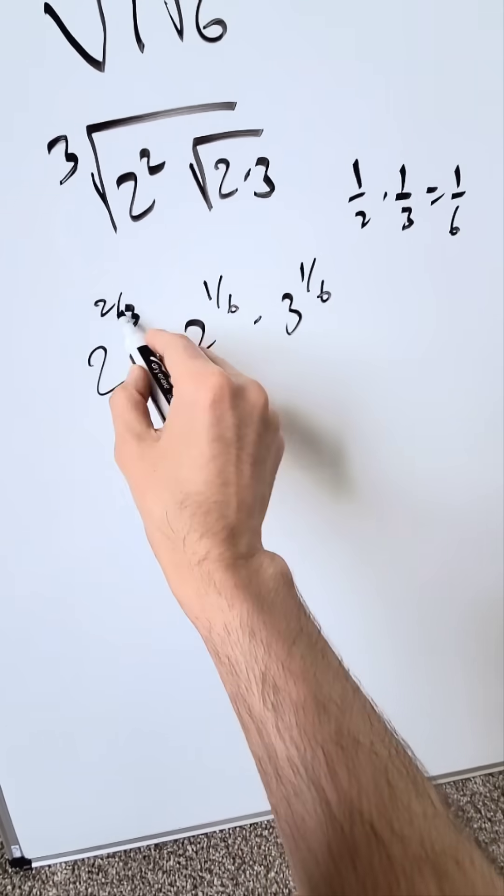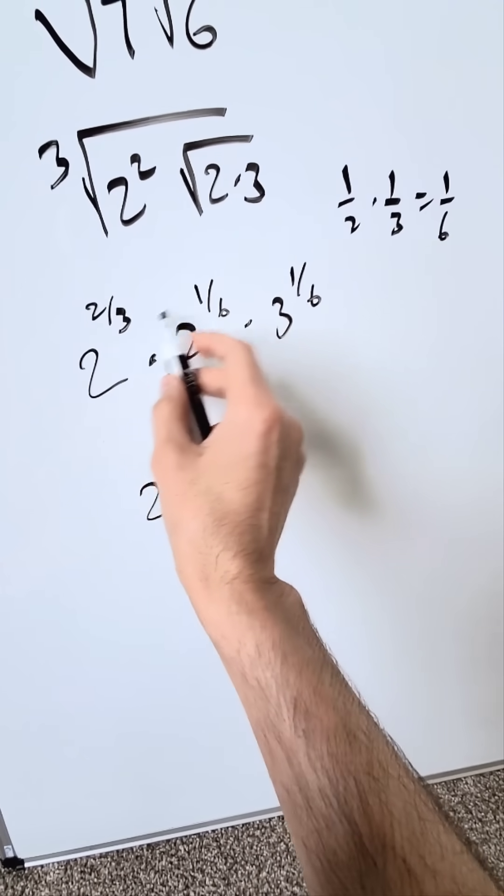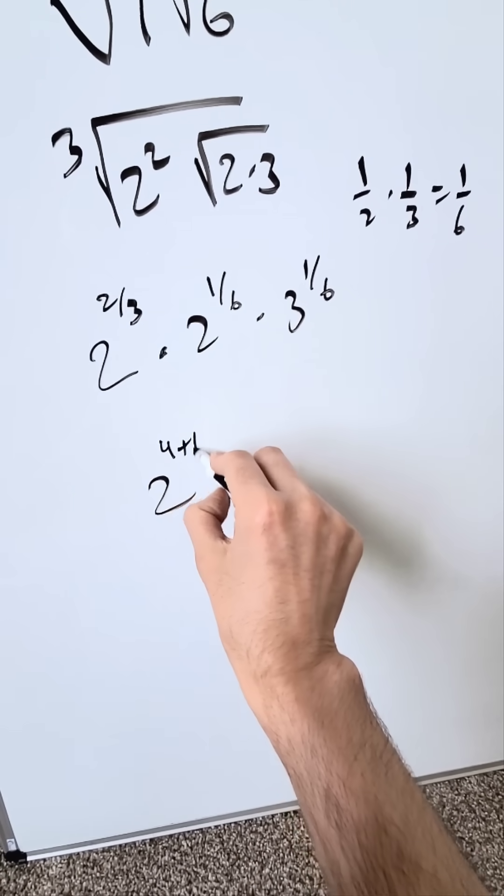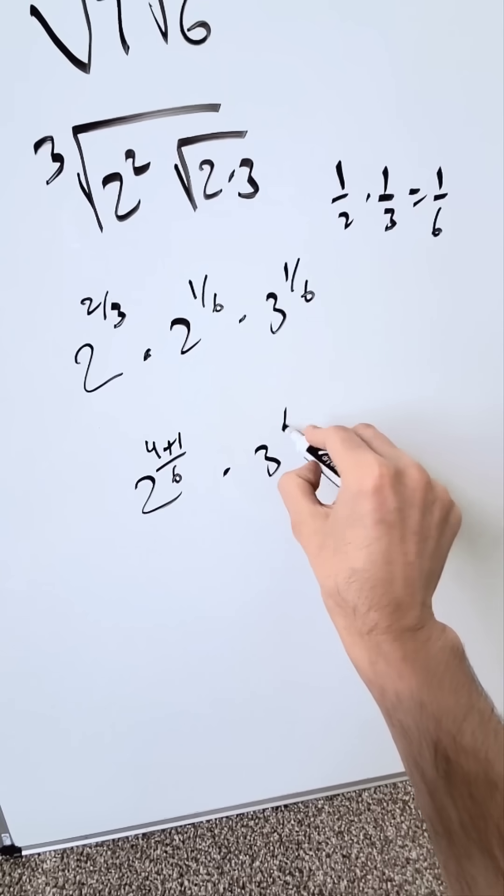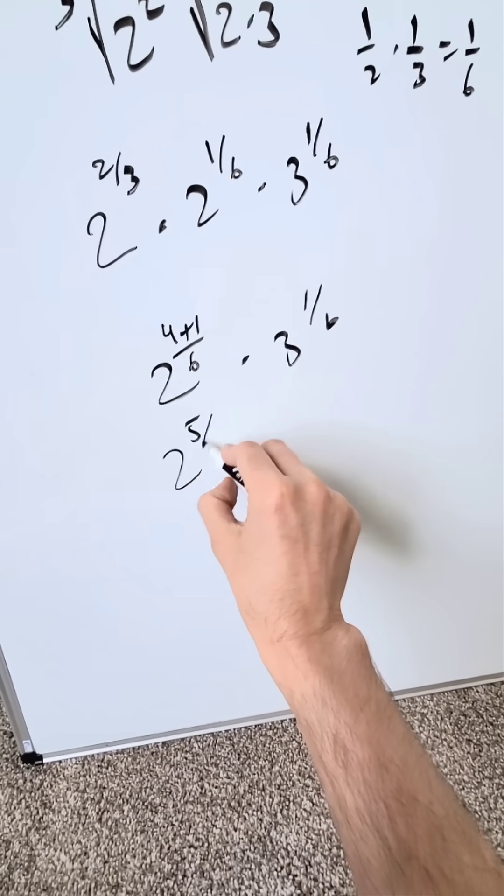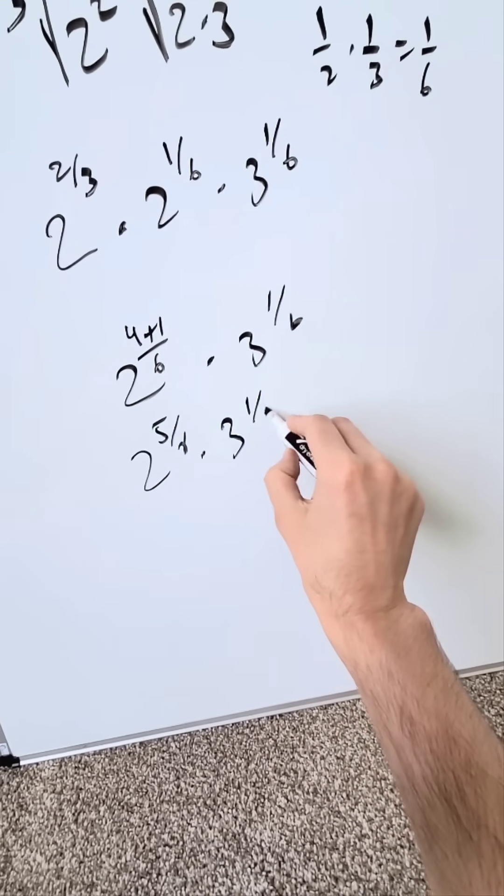I have over here 2 to the power of 2/3 plus 1/6, a common denominator fraction. 3 goes in 6 two times. I have a 4 plus 1/6 times 3 to the 1/6. Now I have here 2 to the power of 5/6 times 3 to the power of 1/6.